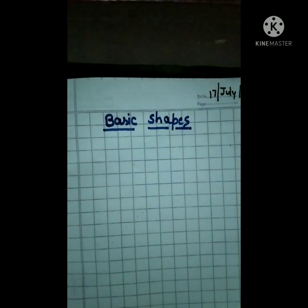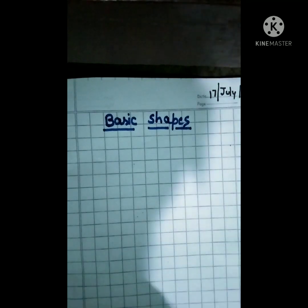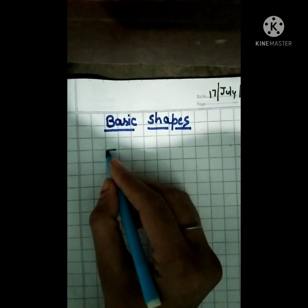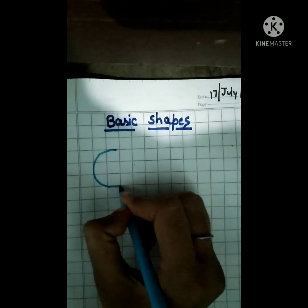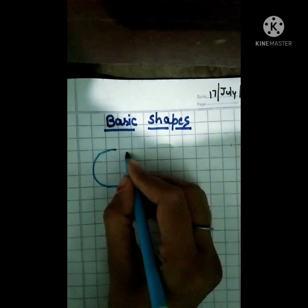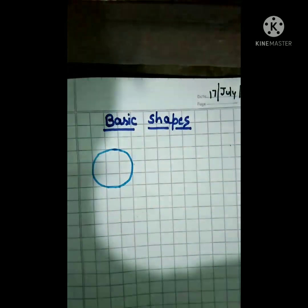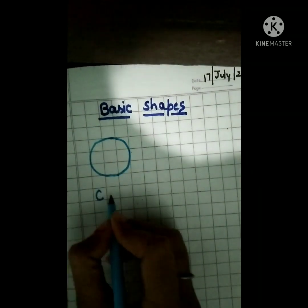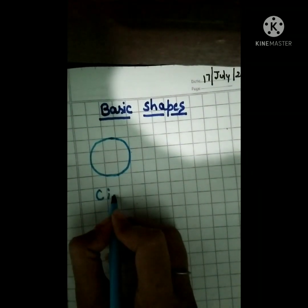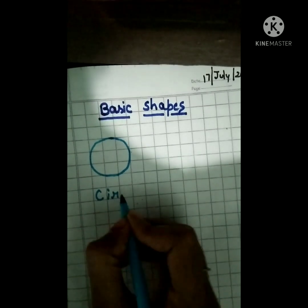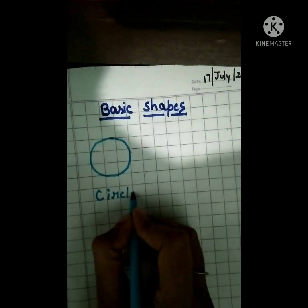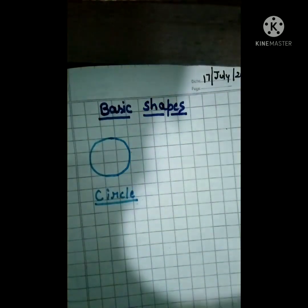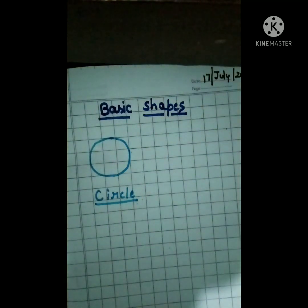The first shape is circle. Circle means what? Bola. C-I-R-C-L-E — circle.